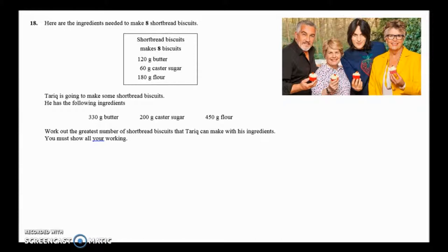We are looking at making 8 shortbread biscuits and we've got a recipe that makes 8 shortbread biscuits. The numbers in the recipe are for 8 biscuits. However, in our cupboard, we have 330 grams of butter, 200 grams of caster sugar and 450 grams of flour. So we have more than the recipe needs.